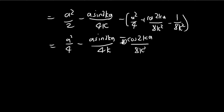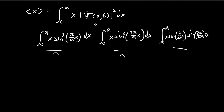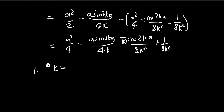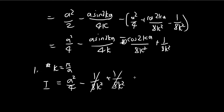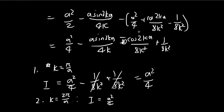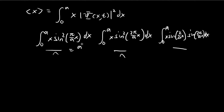Now substituting the numbers for the two cases. For case 1, k = π/a: substituting π/a gives 2π, so sin(2π) is 0 and that term goes away. For the cosine term, we get cos(2π) = 1, giving −1/(8k²), and the default +1/(8k²), so these cancel and we get a²/4. For case 2, k = 2π/a, something very similar happens — sin term becomes 0, cosine terms cancel — and we get a²/4. So both integrals are identical: both equal a²/4.